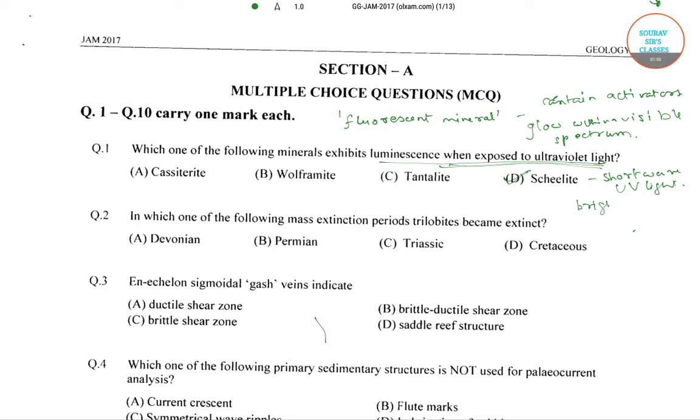Also occasionally it glows red when under mid-wave UV light. So the correct answer to question number one is option D, that is scheelite.